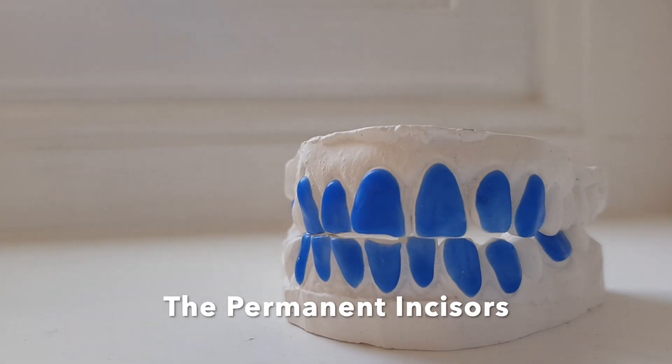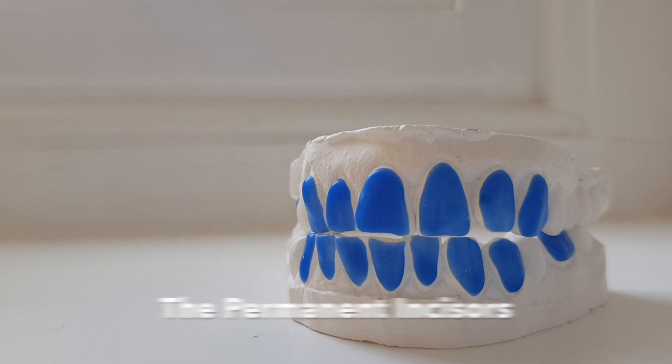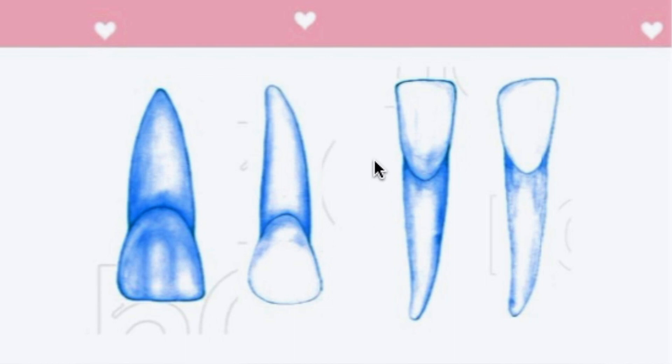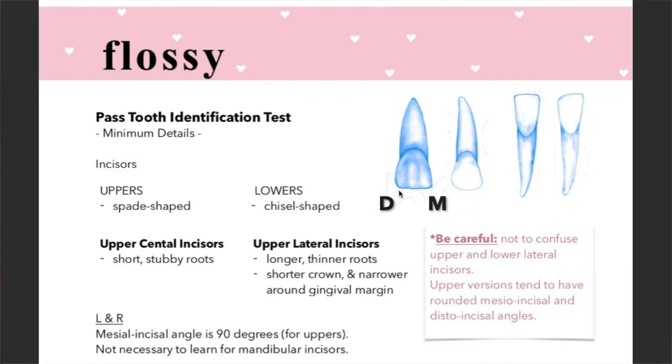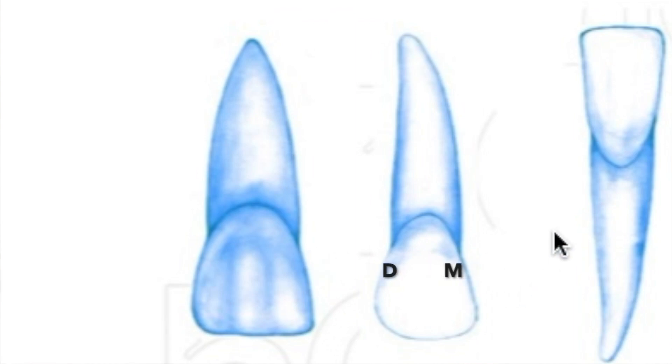So if we begin with incisors, these are very easy to talk about. The uppers generally have a spade-shaped appearance, whereas the lowers tend to have a chisel-shaped appearance. The upper central incisor has a sharp 90-degree angle on the mesial side of the labial surface, whereas the distal side is more curved. That repeats on the upper lateral incisor, however it's slightly more rounded on both sides — that's one way you can tell the difference between upper central and upper lateral.